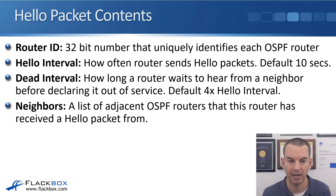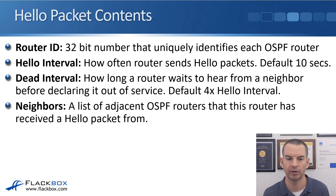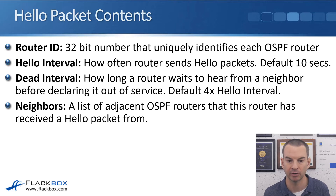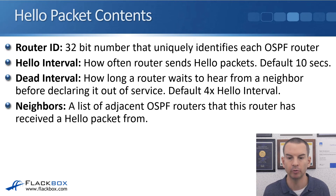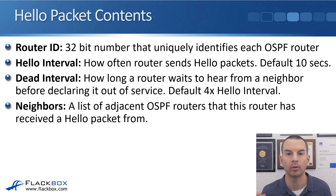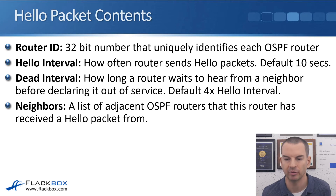The hello packet contains several fields. The router ID is a 32-bit number — looking just like an IPv4 address — that uniquely identifies each OSPF router. The hello interval is how often the router sends hello packets, defaulting to 10 seconds. The dead interval is how long a router waits to hear from a neighbor before declaring it out of service — defaulting to four times the hello interval, so 40 seconds by default. If you change the hello interval to 20 seconds, the dead interval automatically updates to 80 seconds. You can also change these independently.